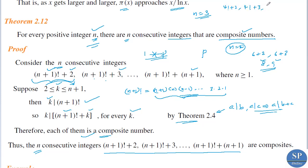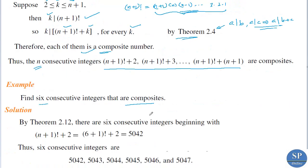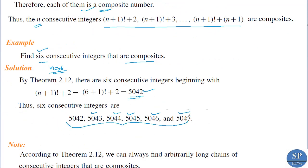Another example: find 6 consecutive integers that are composite. We apply the theorem with n = 6. The first number is (6+1)! + 2 = 7! + 2 = 5040 + 2 = 5042. The remaining five numbers are 5043, 5044, 5045, 5046, and 5047. All six of these are consecutive composite numbers.